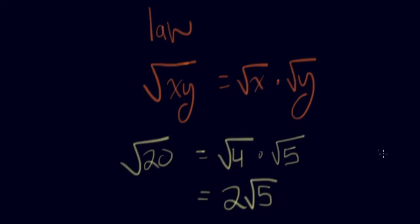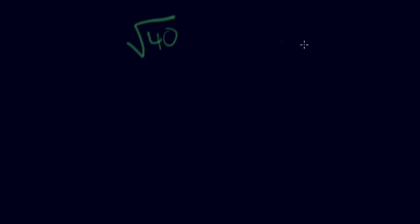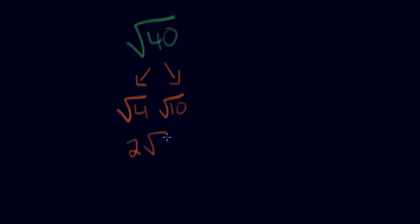Let's go with another question. What is the simplified version of the square root of 40? What two numbers multiply to give you 40 where one is a perfect square? And I'm left with 2 root 10. That's my final answer. And actually, that's how you say it — 2 root 10.